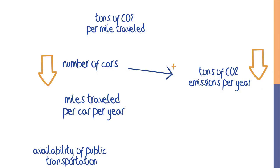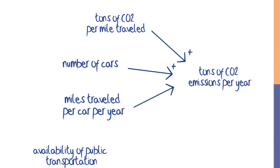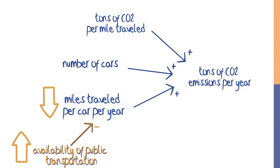Let's add the rest of the arrows to this causal diagram. As tons of CO2 per mile traveled increases, tons of CO2 emissions also increases, so we draw an arrow and mark it with a plus sign. Similarly, as miles traveled per car per year increases, tons of CO2 emissions per year increases, so we mark that with another arrow with a plus sign. Sometimes an increase in one variable results in a decrease in another. For example, if the availability of public transportation in a city increases, all else being equal, miles traveled per car will decrease — we represent this with a minus sign. Tracing through: as availability of public transportation increases, miles traveled per car decreases, causing tons of CO2 emissions per year to decrease.